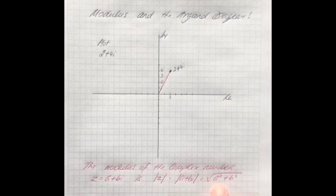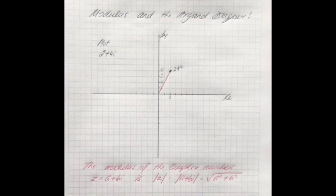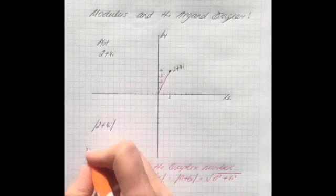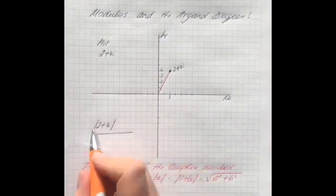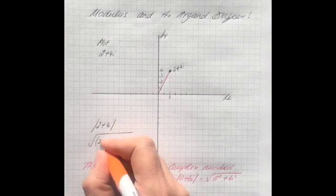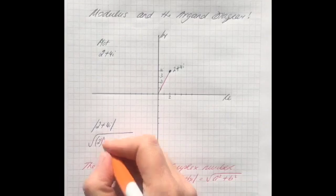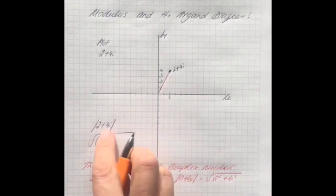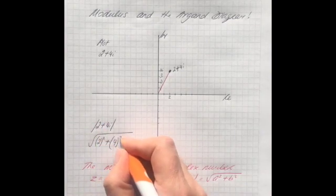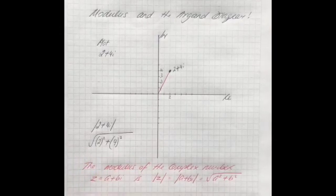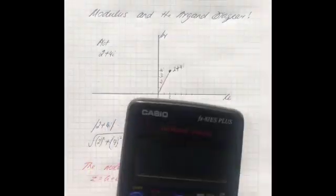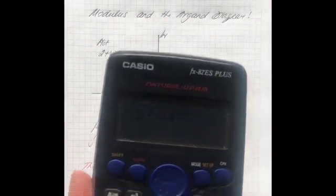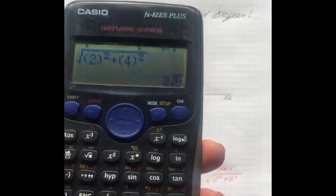So be very familiar with this - the square root of a squared plus b squared is how we calculate the modulus. So let's say we've been asked to calculate the modulus of 2 plus 4i. Then what we would do is put the square root, the a represents the first value, so put that in brackets and don't forget to square it, and then plus, and then the b represents the second value, the coefficient of i in this case, which is 4, and don't forget to square it.